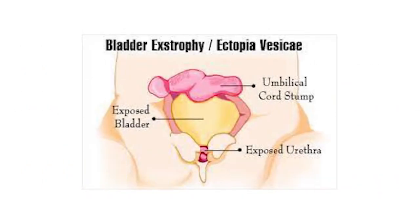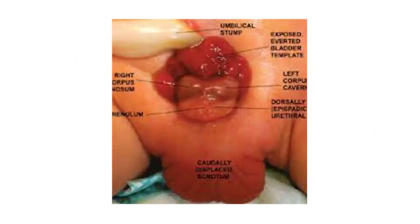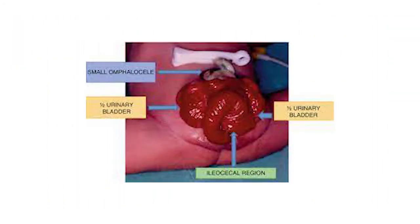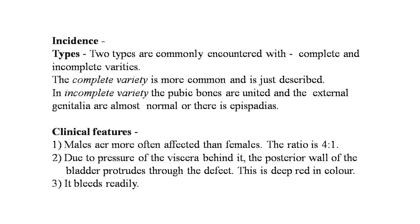Here is the animated picture of bladder ectrophy — ectopia vesicae is clearly seen. There is the exposed bladder, exposed urethra, and umbilical cord stump. This is the actual picture of ectrophy. Another image shows the ileocecal region where the intestine and ileum are outside the abdomen.